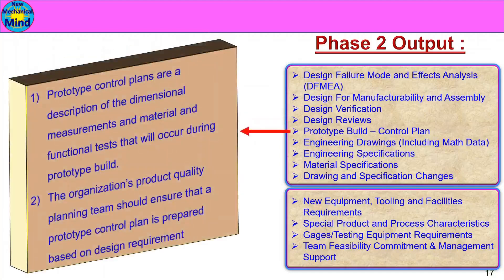Prototype control plans are a description of the dimensional measurements and material and functional tests that will occur during prototype build. The organization's product quality planning team should ensure that a prototype control plan is prepared based on design requirements. Existing machines and tools are used by the product manufacturing process. The APQP process tool is prepared by the prototype control plan.